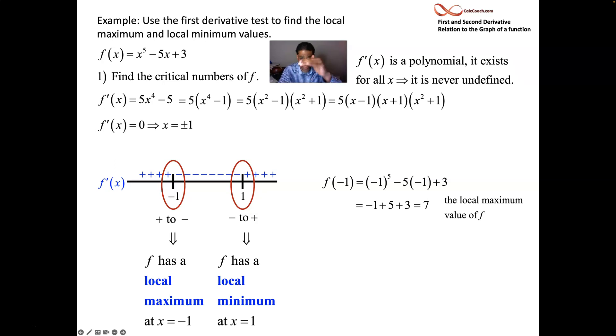We reach a peak of 7 when x is negative 1. Now we reach a valley when x is 1 that the sum of those coefficients is a negative 1. That's the local minimum value of our function.